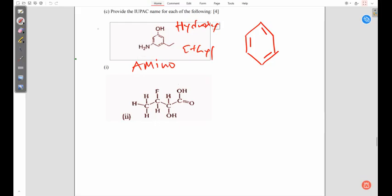Where do we start counting from? If you start from here, 1, 2, 3, 4, 5. Which one is more important? Which do we give priority to?